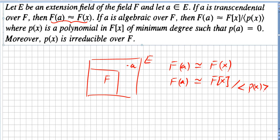If a is algebraic over F, then F(a) is isomorphic to F[x] modulo the polynomial p(x), where p(x) is a polynomial in the ring of polynomials of minimum degree such that p(a) equals zero. Moreover, p(x) is irreducible over F.